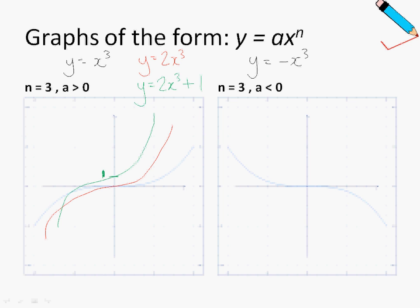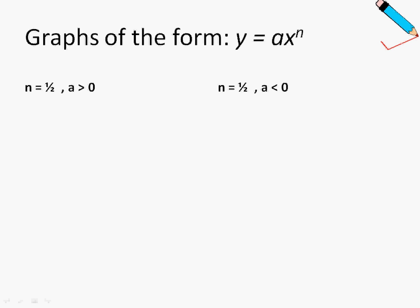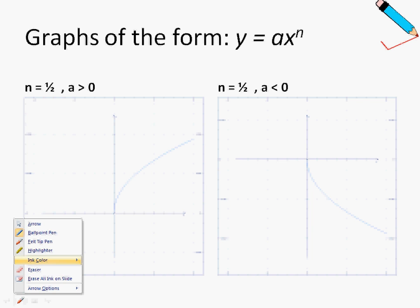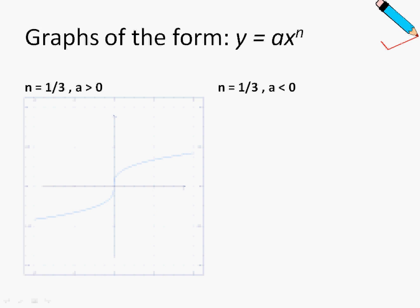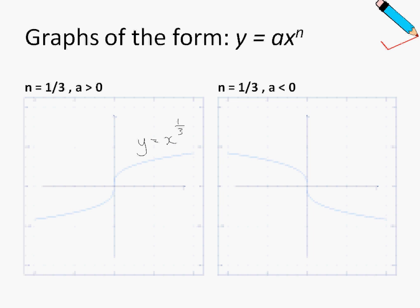When n is one half and a is positive, the graph will look like this; when a is negative, the graph reflects. Since x to the power of one half is just the square root, this graph is essentially y equals root x, and the reflected graph is y equals negative root x. When n is one third, the graph looks like y equals x to the power of one third, and its reflection is y equals negative x to the power of one third. The right-hand graph is always a reflection of the left-hand graph along the x-axis.